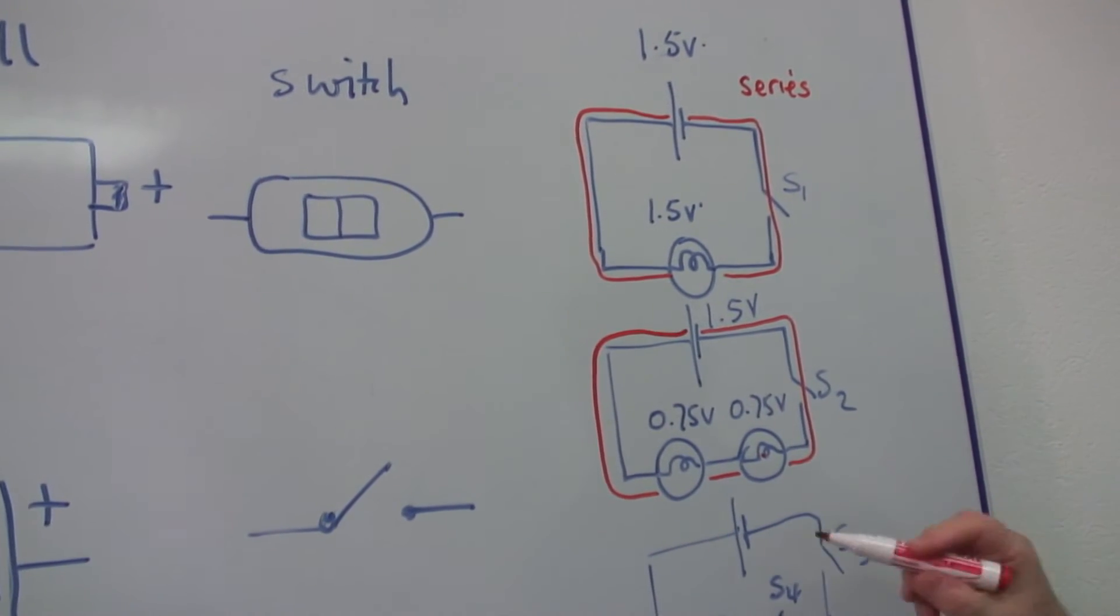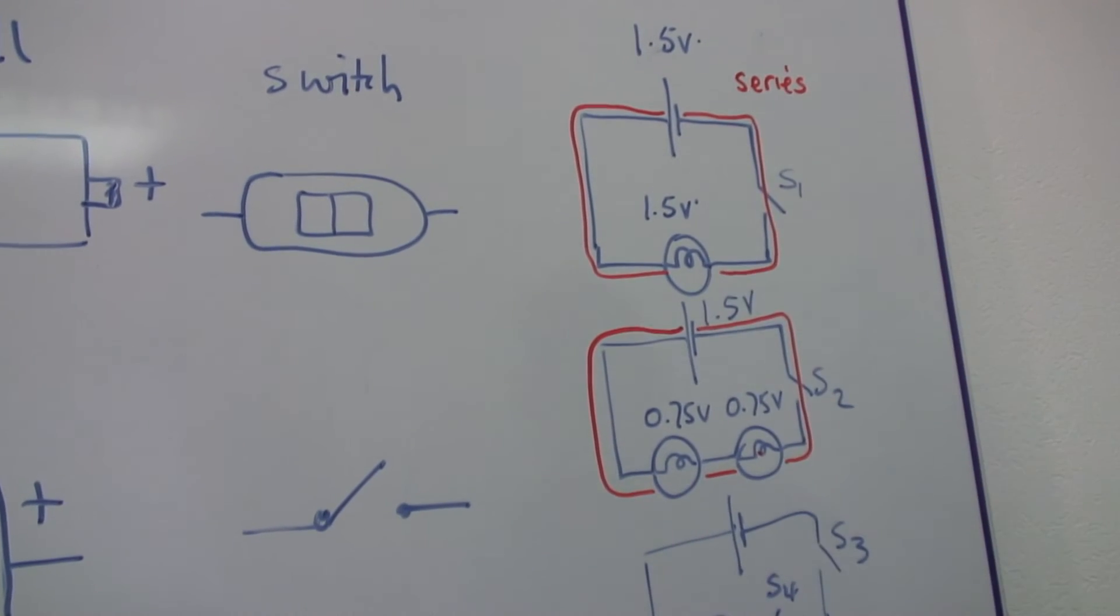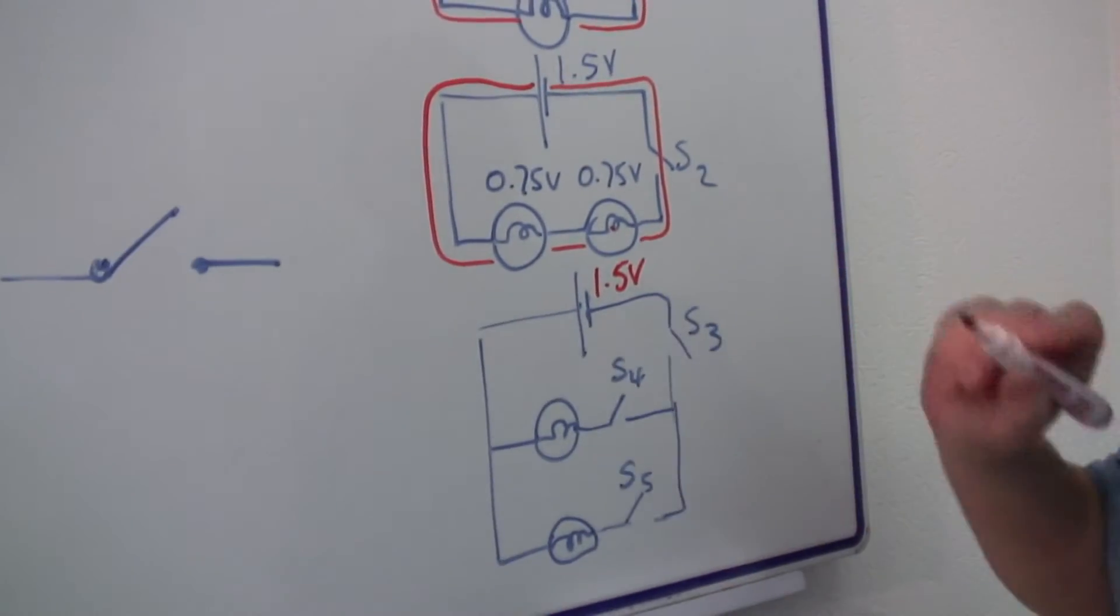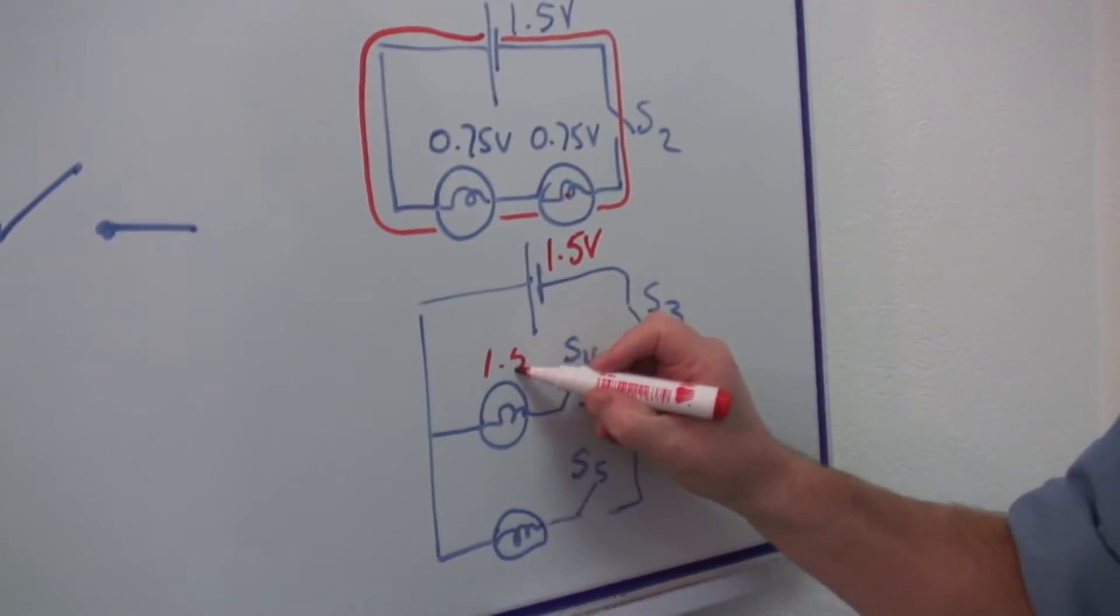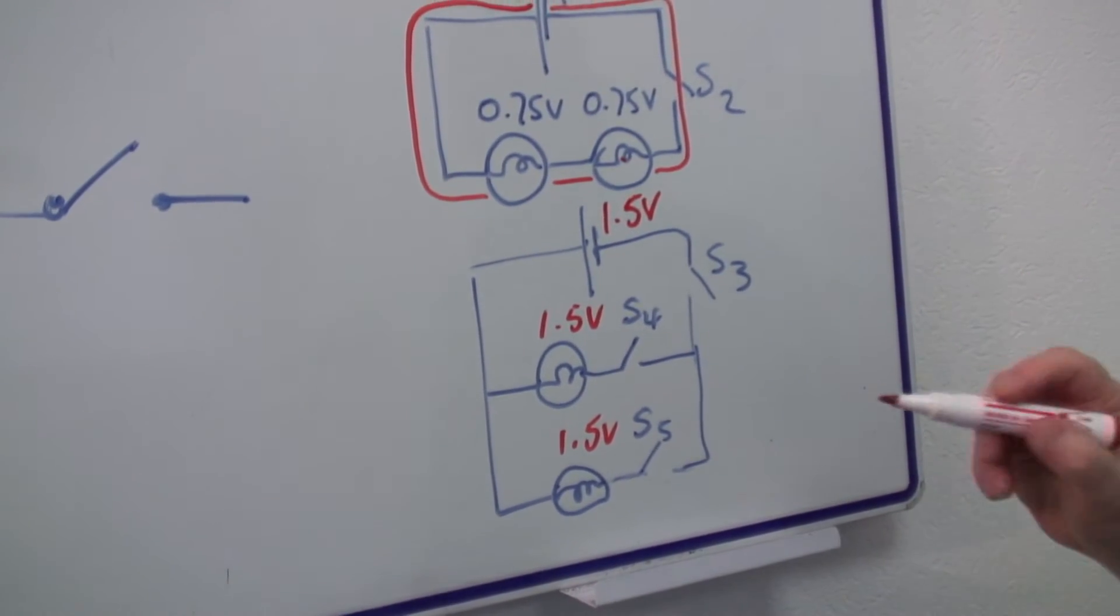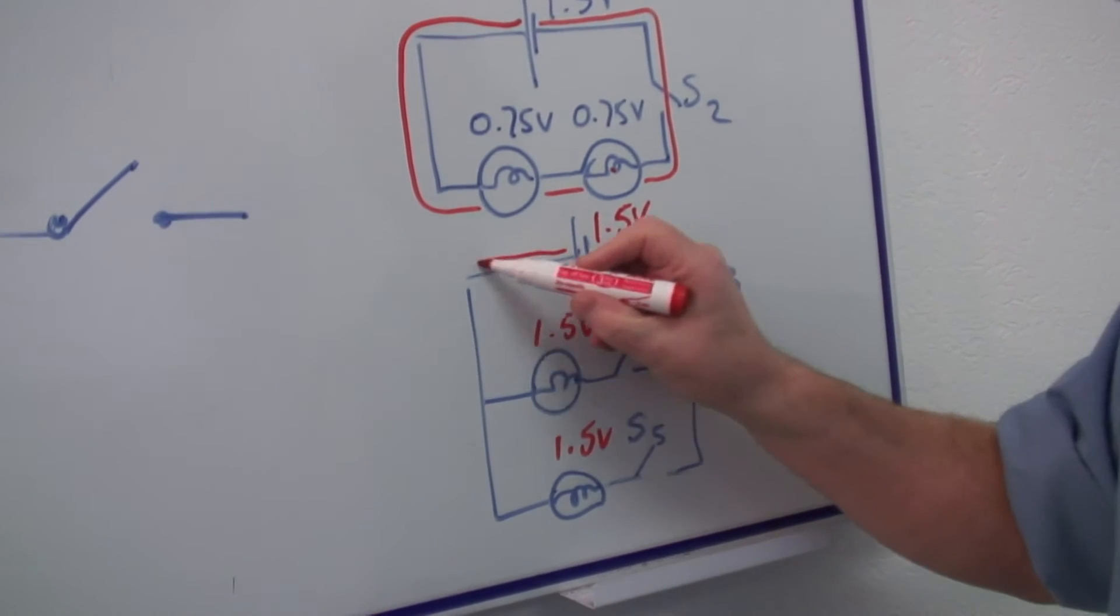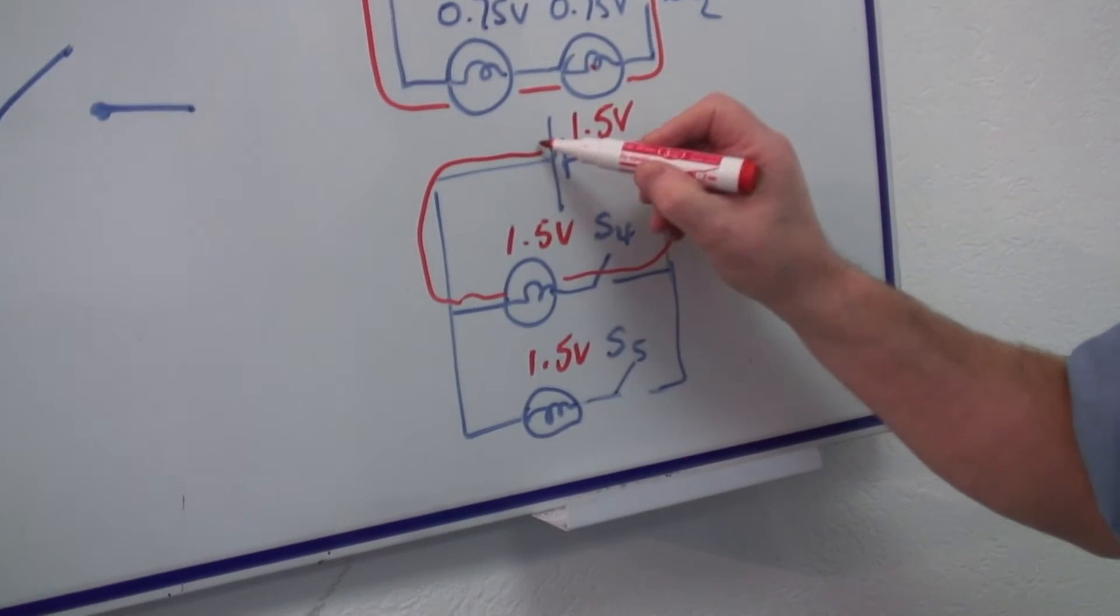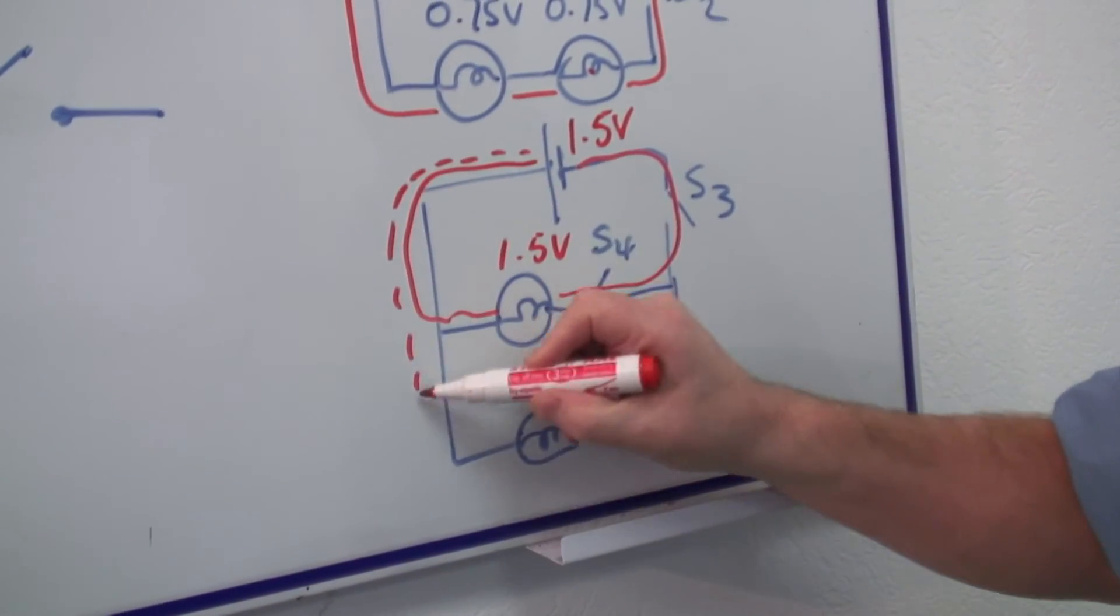If I want to connect more than one bulb to the same power supply, it can still be 1.5 volts, and these can be 1.5 volt bulbs. And in fact, I've got two circuits here. I've got this one, and I've got another one which goes through the bottom.